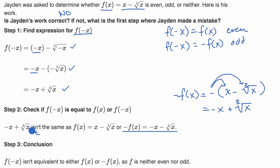What he should have said is, it actually is the same as -f(x). And so therefore his conclusion should be that f(x) is odd.